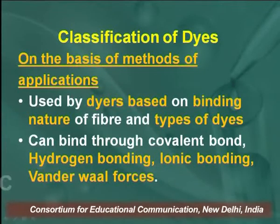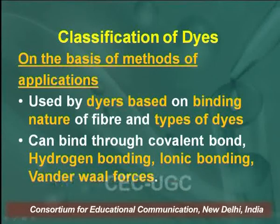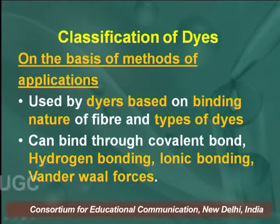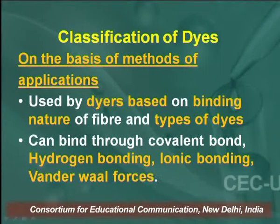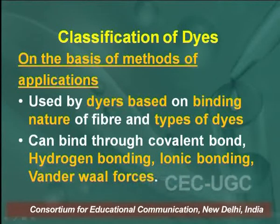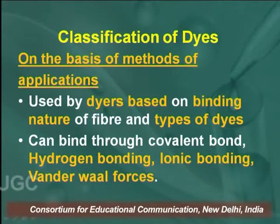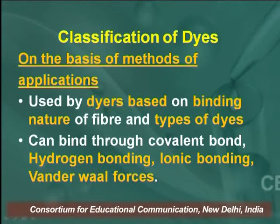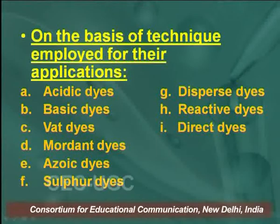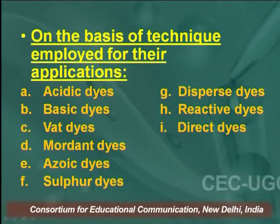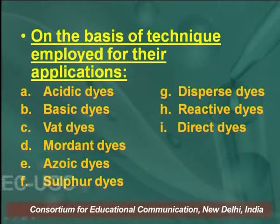Now, what is the classification of dyes? How can we classify dyes before using them — how can we find out which dye will be suitable for particular fabrics? We can classify dyes on the basis of their methods of application, based on the binding nature of the dye to the fibre — through covalent bond, hydrogen bond, ionic bond, or van der Waals forces — and on the basis of techniques employed for their application.